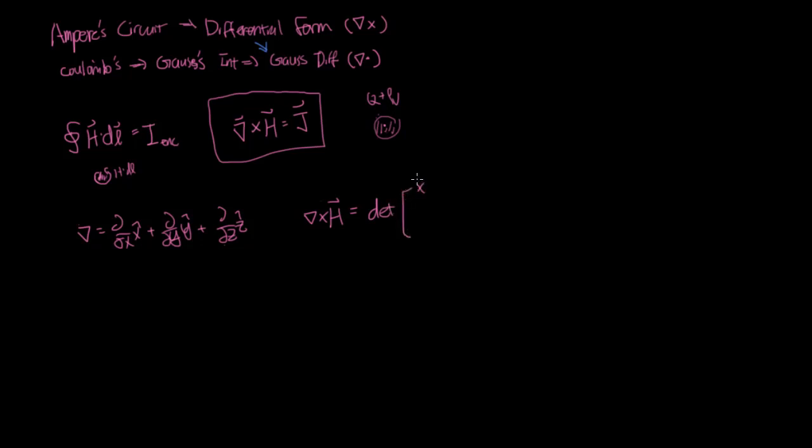it primarily works well in the Cartesian coordinate system. And you can think of the curl as equal to the determinant of this matrix, x hat, y hat, z hat, d by dx, d by dy, d by dz, and then you have your hx, hy, and hz.